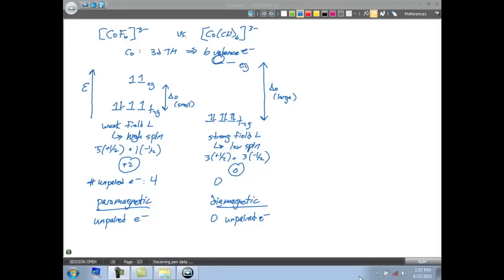This is gonna be very important because if we have unpaired electrons, we're gonna have this complex be attracted to a magnetic field. When we have a high spin versus a low spin complex, it's really gonna influence the magnetism. In the case of our cyanide complex here, we have zero unpaired electrons, so it's not attracted to a magnetic field at all. Whereas our fluoride complex will be attracted to a magnetic field because it has four unpaired electrons.